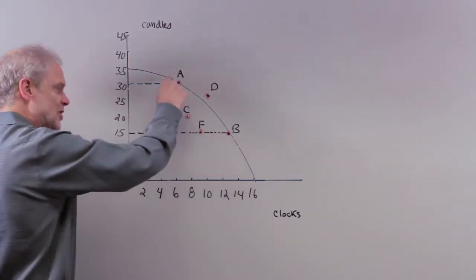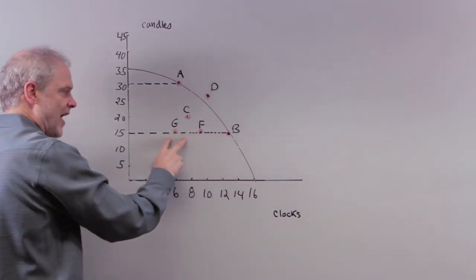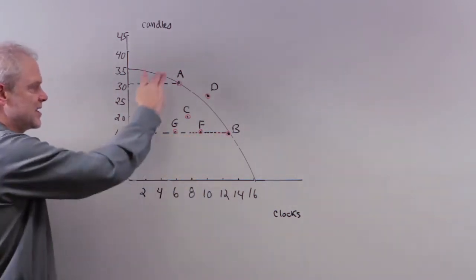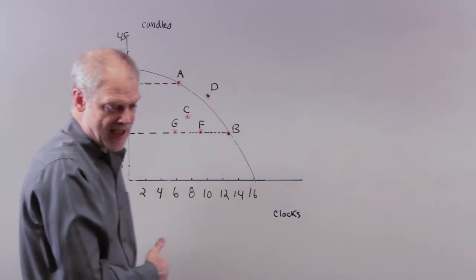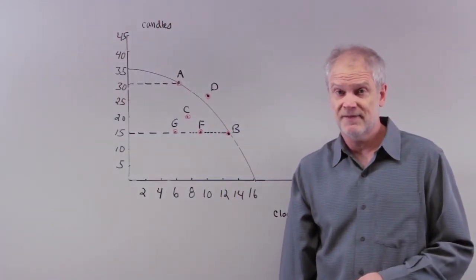So, the opportunity cost of producing this many additional clocks. At point A, you're producing 6 clocks, 30 candles. At point B, you're producing 15 candles and 14 clocks. So, the point is, you've increased your clocks, but to do that, you had to give up candles. The opportunity cost of having more clocks is less candles. And that amount is 15. So, your answer to number 10 is D.